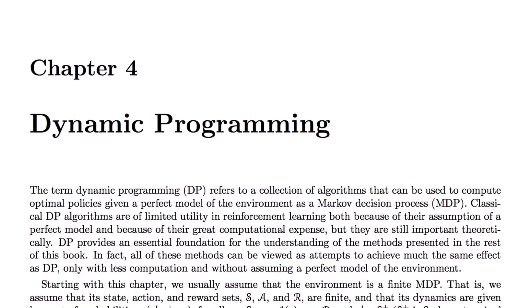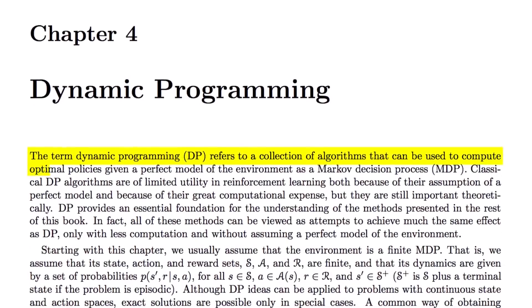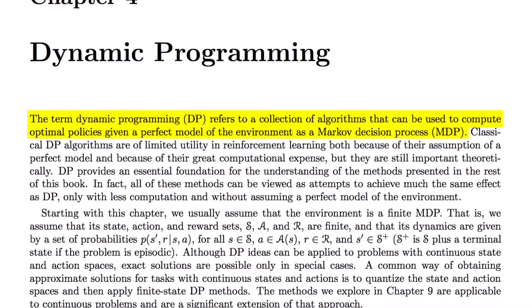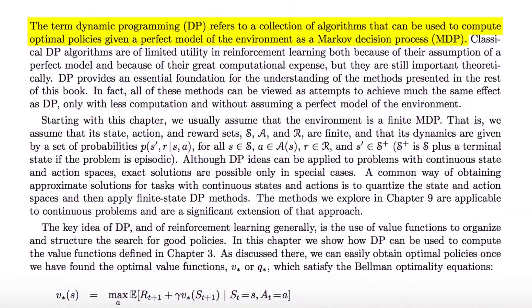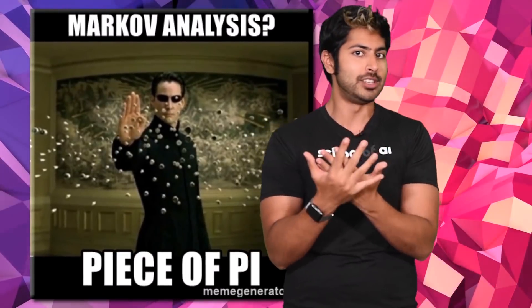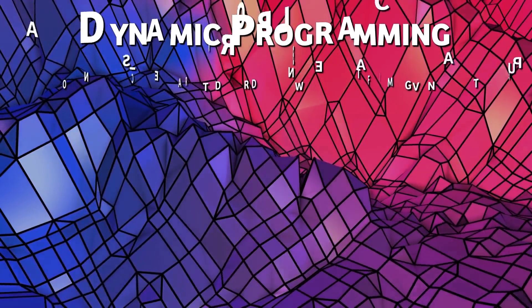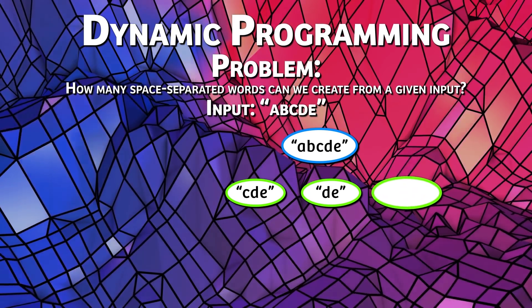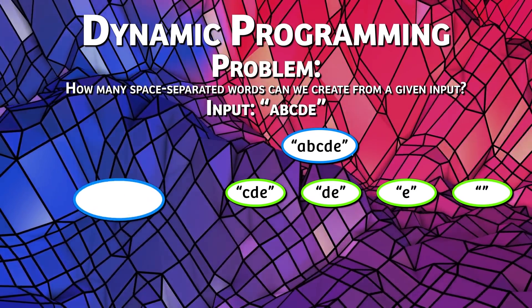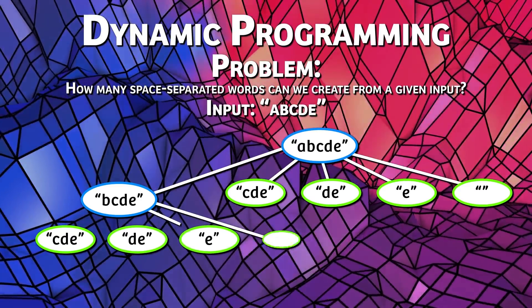If we look at the bible of RL — 'Reinforcement Learning: An Introduction' by Sutton and Barto, chapter 4 — we come upon a useful definition: dynamic programming refers to a collection of algorithms that can be used to compute optimal policies given a perfect model of the environment as a Markov decision process. That's perfect for us since we already know the transition probabilities and we have a reward function. Dynamic programming breaks down complex problems into sub-problems, solves them, then combines the solutions to solve the larger problem. It's used in many real-world applications like bioinformatics, scheduling, and routing algorithms.